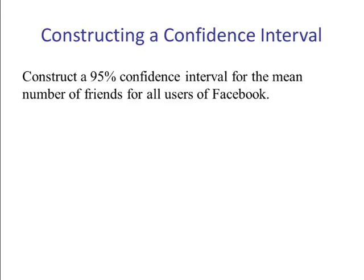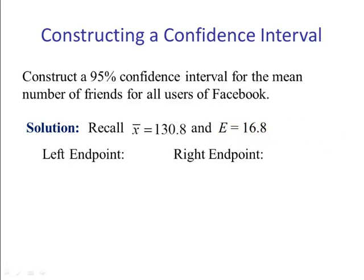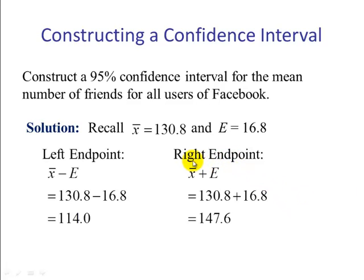Now if we want to construct a 95% confidence interval for the mean number of friends of all users of Facebook, we're going to use our point estimate and what we just computed, our margin of error. Our point estimate was 130.8 friends and our margin of error was 16.8. The left endpoint, or lower limit, is our point estimate minus the margin of error, which gives us 114.0. The right-hand endpoint, or upper limit, is our point estimate plus the margin of error, which is 147.6. These two together make our confidence interval. We are 95% confident that μ is between these two values.